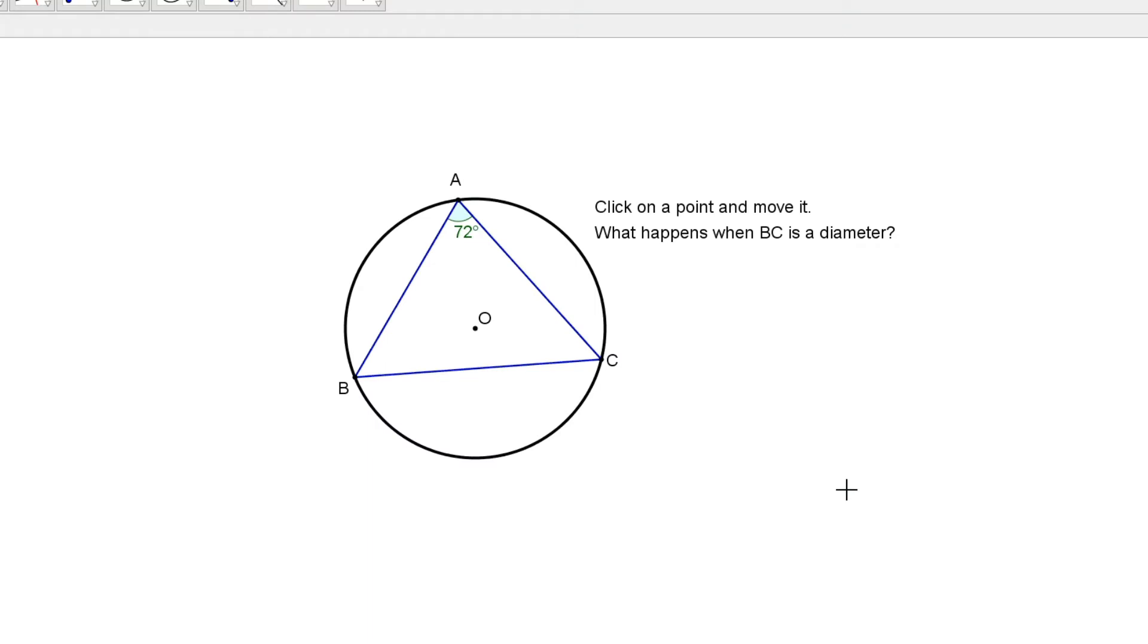Now, what you want to observe here is what happens when BC is the diameter. So, I'm going to move B up to there so that BC is the diameter. What do you notice? You notice that the angle of the circumference is 90 degrees.